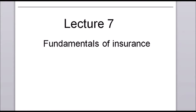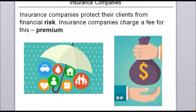Welcome to our seventh class on financial institutions. In this class, as well as the following one, we will talk about insurance and insurance companies — they are also a type of financial intermediary. In class seven we will talk about some fundamentals of insurance, starting with what insurance companies do. In general, insurance companies take the risk off of their clients' hands and protect them from financial risk. There are different kinds of insurance, including life insurance and health insurance.